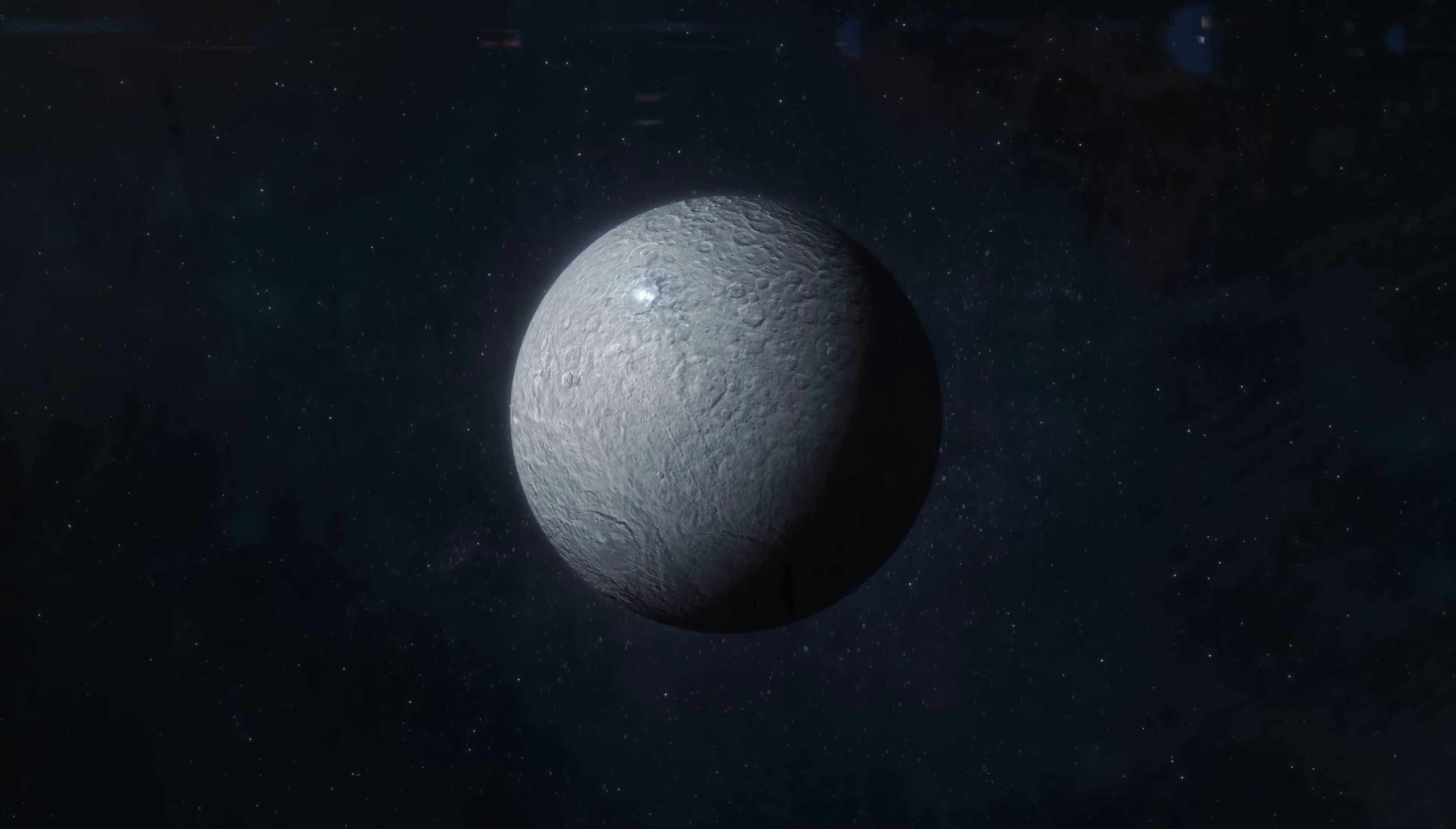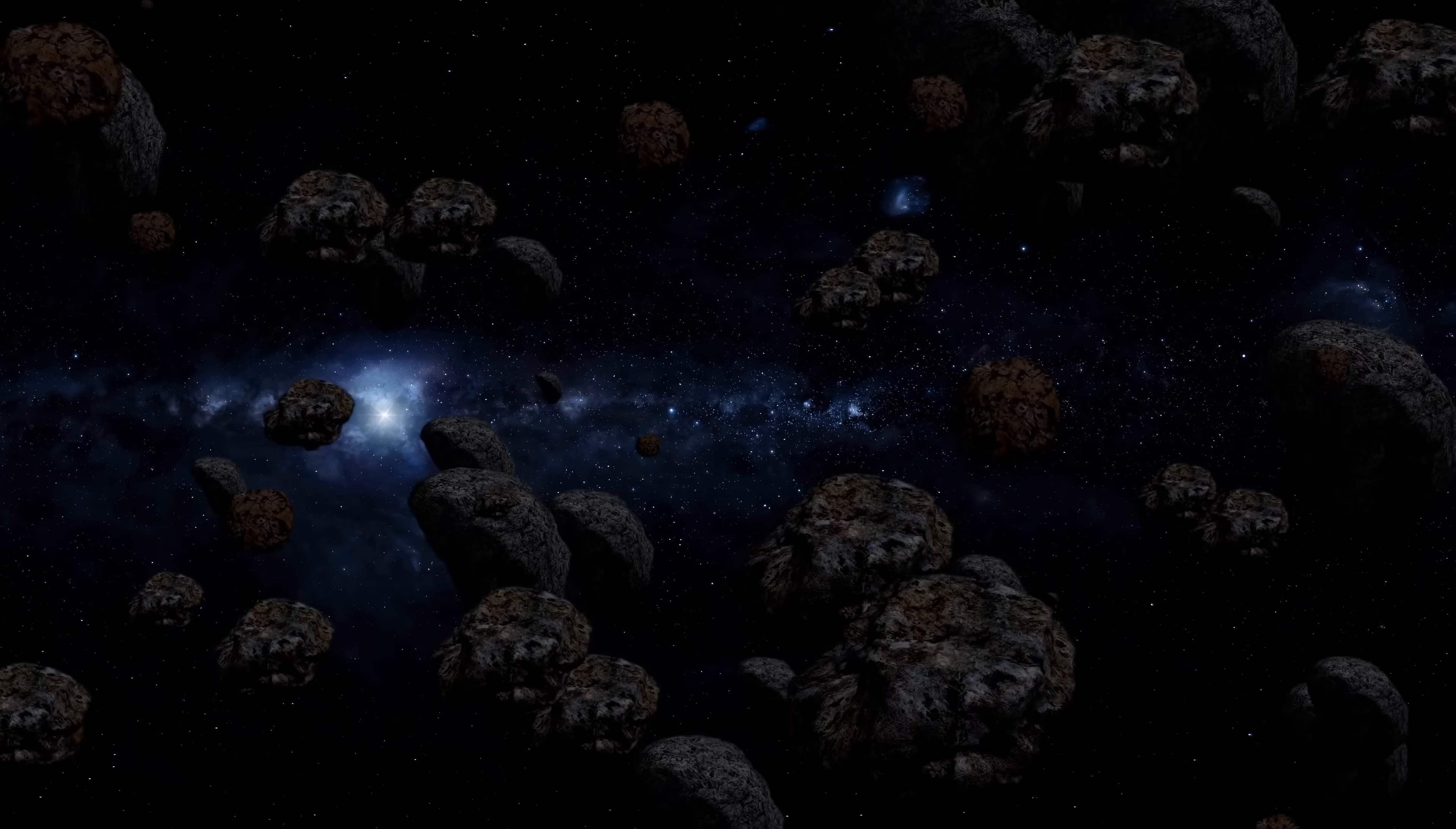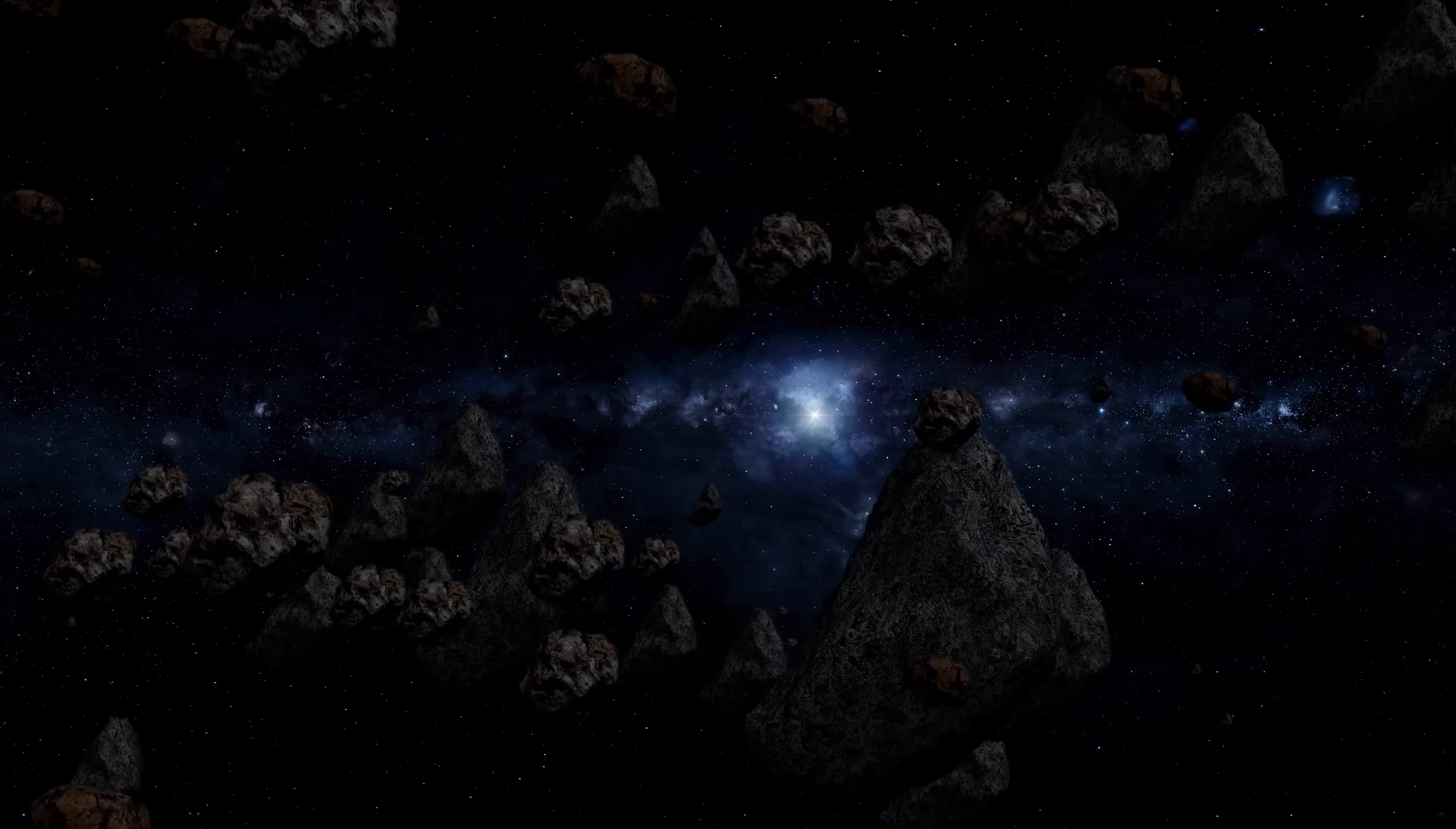The largest known object in the asteroid belt is Ceres, which is about as large around as the state of Montana is wide. Ceres, once classified as an asteroid, is now classified as a dwarf planet because of its spherical shape. Because it has not cleared most other objects from its orbit, Ceres is not classified as a major planet. Most asteroids are smaller than Ceres, though. Many scientists believe that asteroids are material that was left over from the birth of our solar system.